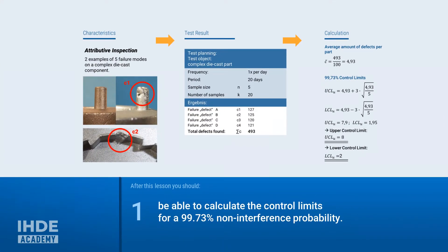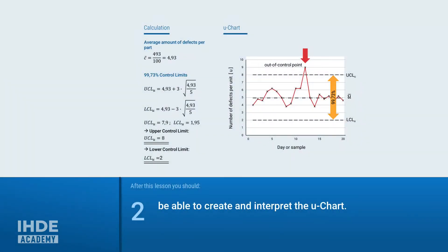Hello again to this lesson, which essentially has two learning objectives. At the end, you should be able to calculate the control limits for a non-interference probability of 99.73% and you should be able to use this knowledge to create a control chart and interpret it.